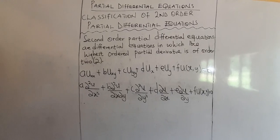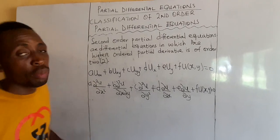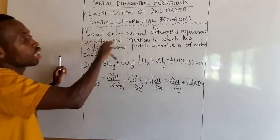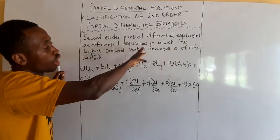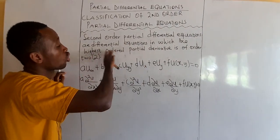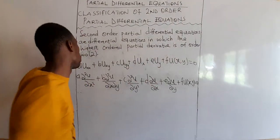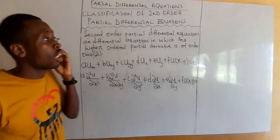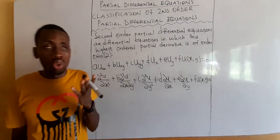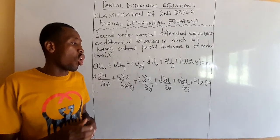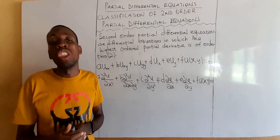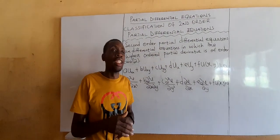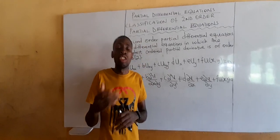We start by looking at what second order partial differential equations are and the forms they take. Second order partial differential equations are differential equations in which the highest ordered partial derivative is of order 2. So we learn how to classify partial differential equations according to order — when the highest order is 2, we say that partial differential equation is of order 2.